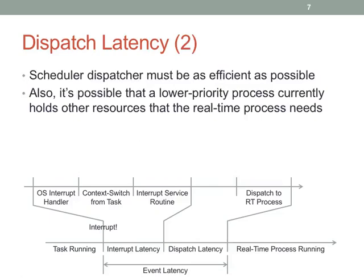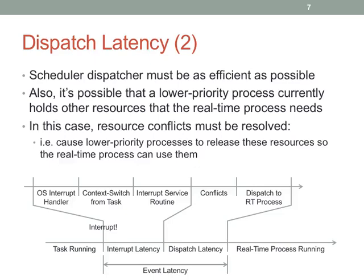The dispatcher has to be efficient. There's also a potential wrinkle: when we get to running a real-time process, it may need resources that some lower-priority process already holds. This is why real-time process discussions include a conflict resolution step — the OS needs to reclaim resources held by others that the real-time process wants to access. After that, the OS sets up for the process to run and switches to it.